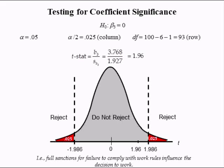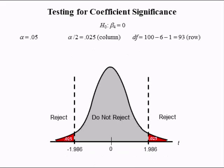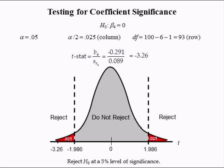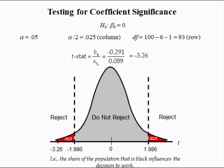Full sanctions for failure to comply with work rules also influence the decision to work. The fourth individual T-test has a null hypothesis of beta 4 equal to 0. The T-stat for the fourth coefficient is the estimated coefficient for variable X4 divided by its standard error, which is negative 0.291 divided by 0.089, equal to negative 3.26, putting it in the lower part of the distribution. Hence, we reject the null hypothesis at a 5% level of significance, meaning the share of the population that is black influences the employment population ratio.